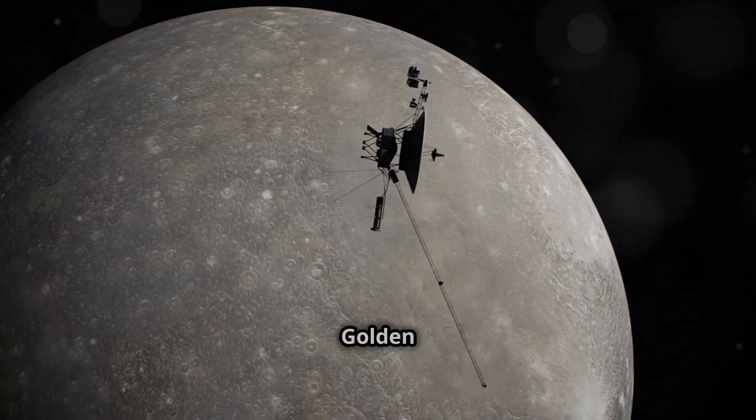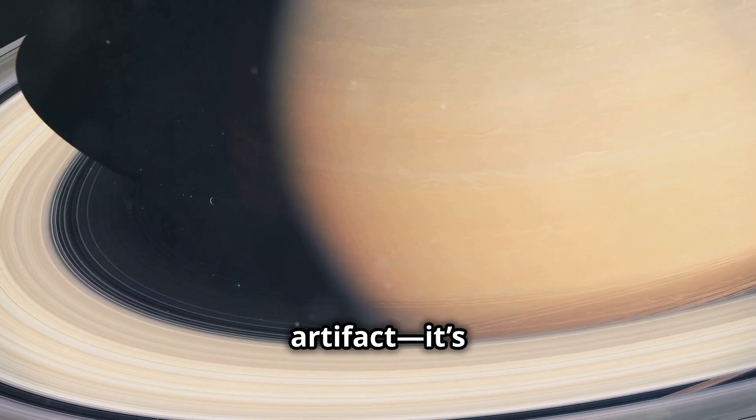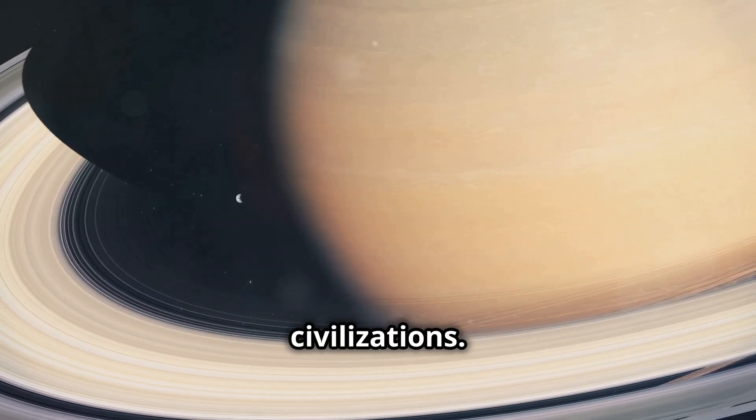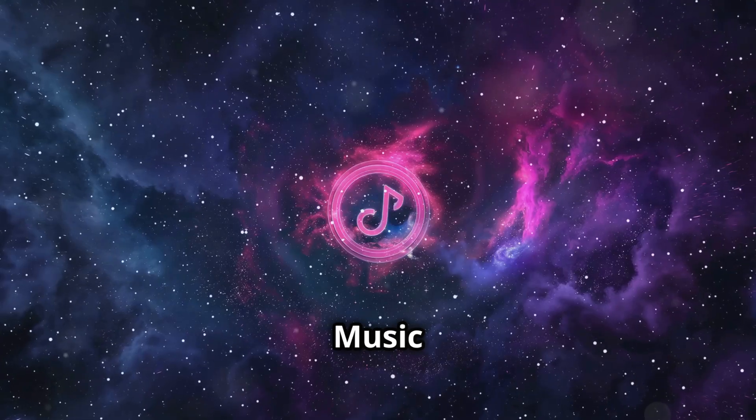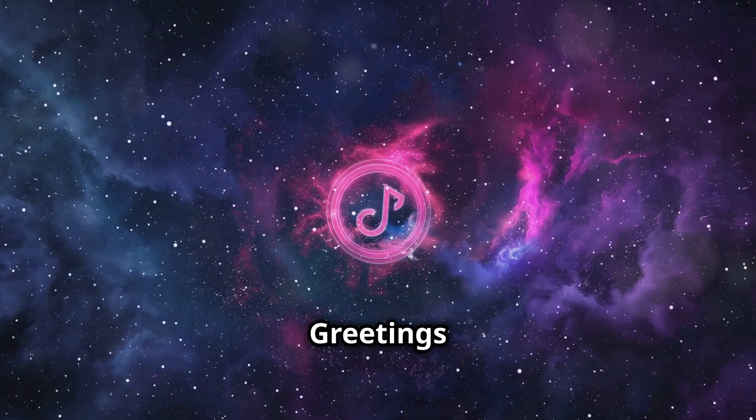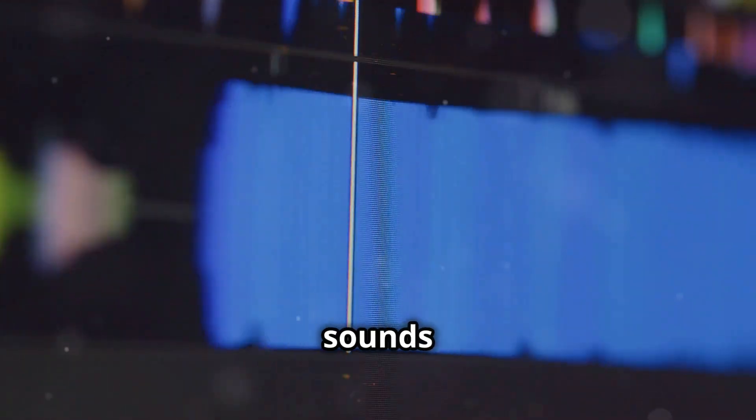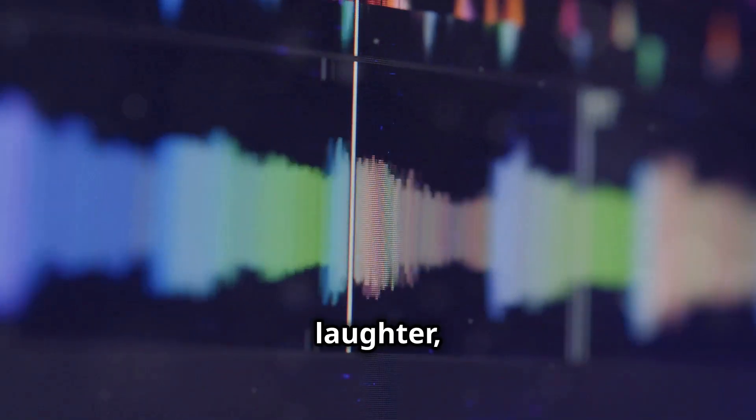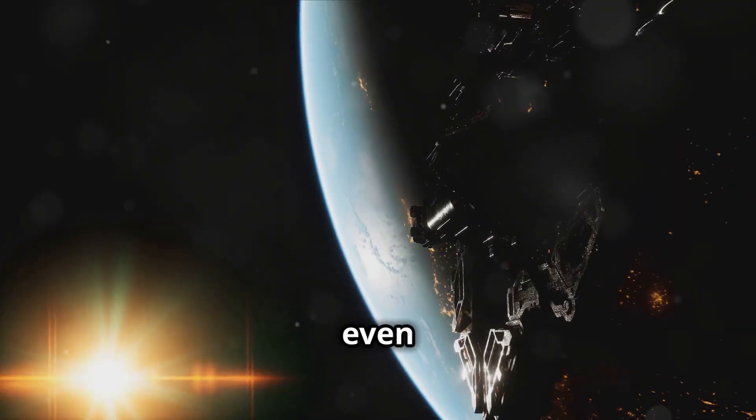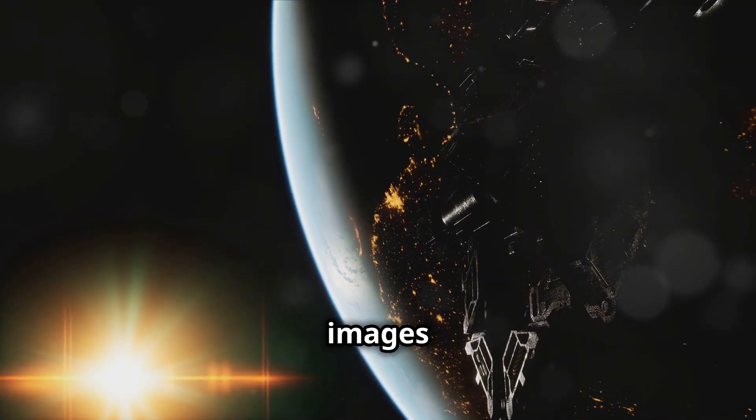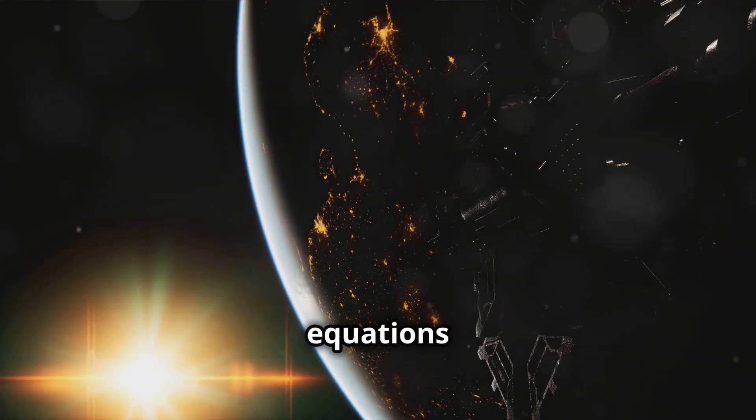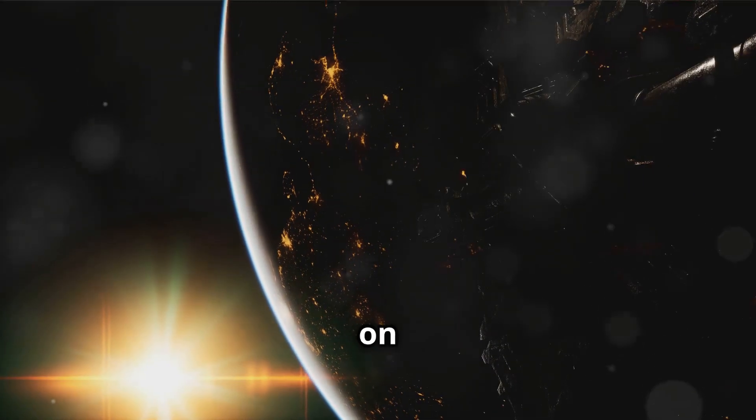Now let's talk about the golden record. This is no ordinary artifact. It's a message to potential alien civilizations. But what's on it? Music from Bach to Chuck Berry, greetings in 55 languages, the sounds of nature, thunder, laughter, a baby's first cry. It even includes 116 images that showcase humanity's achievements, from mathematical equations to snapshots of daily life on Earth.